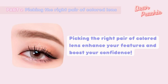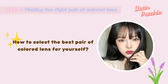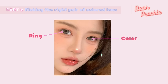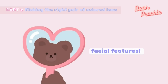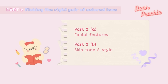Picking the right pair of colored lenses enhances your features and boosts your confidence, while the wrong choice does the opposite. The color and ring designs of the lens shouldn't be the only aspects you pay attention to — we must also consider our facial features. This section is divided into two parts: Part 2A covers selecting colored lenses based on facial features, and Part 2B covers picking the right pair according to your skin tone and style.